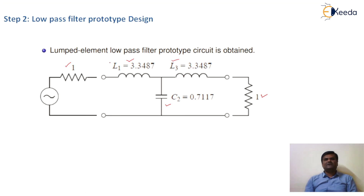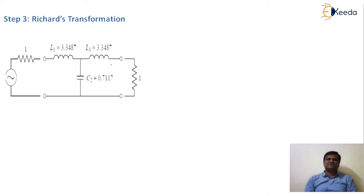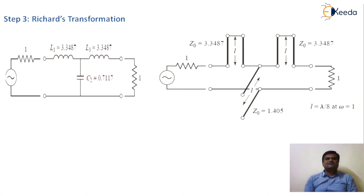We know that lumped components work well at low frequencies, but these components are not feasible at microwave frequencies. For microwave frequencies, we go for stubs. We get stubs by using Richards transformation. An inductor is represented with the help of a short circuit stub, and a capacitor is represented via an open circuit stub.